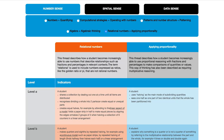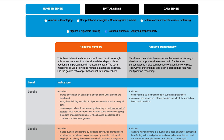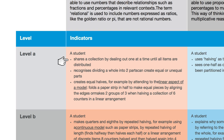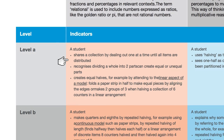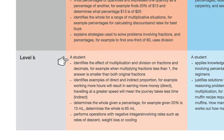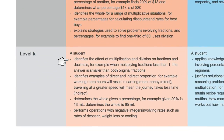Begin by looking at the beginning and end points of each pair of threads to get an understanding of the range. For example, the first indicator of the rational numbers thread begins with 'shares a collection by dealing out one at a time until all items are distributed', and ends with the last indicator of 'identifies the effect of multiplication and division on fractions and decimals'.